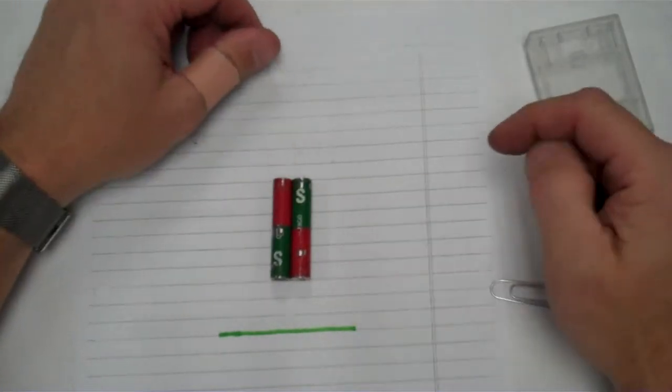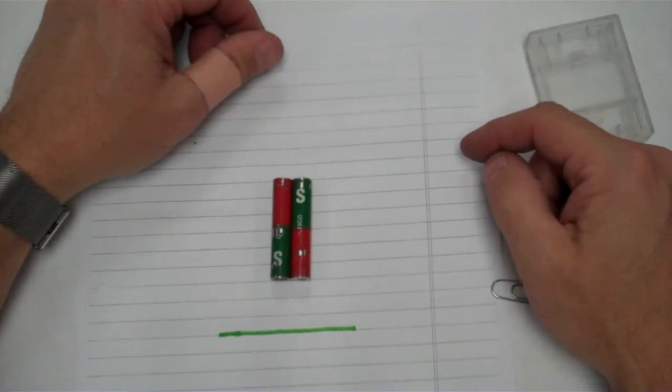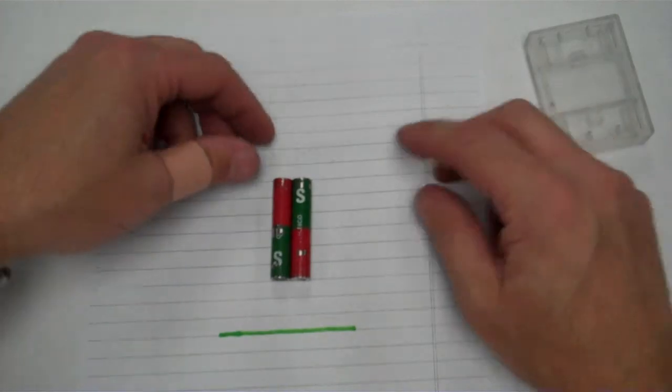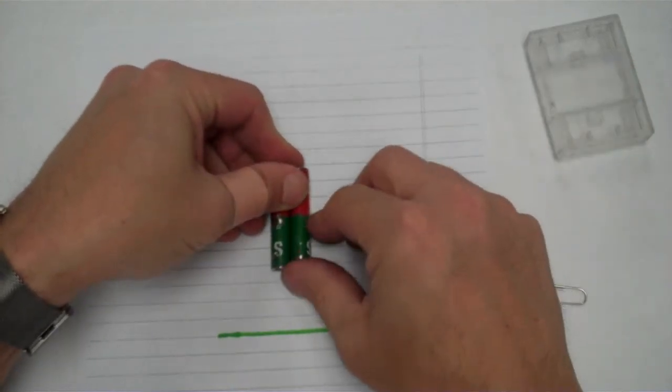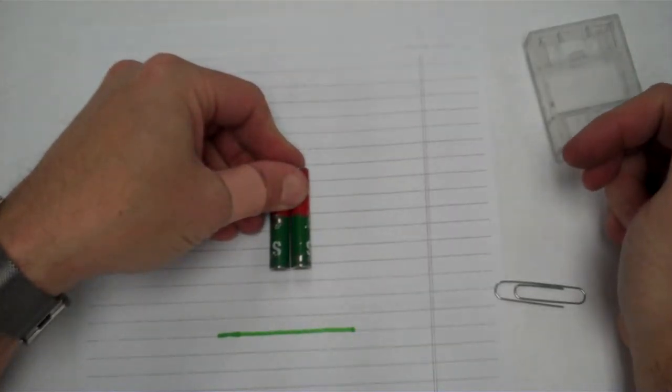That's because in this orientation the magnetic domains are canceling one another, whereas in this orientation they help to reinforce one another, making a strong magnetic field.